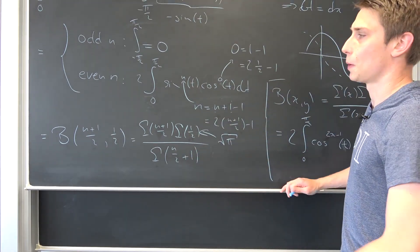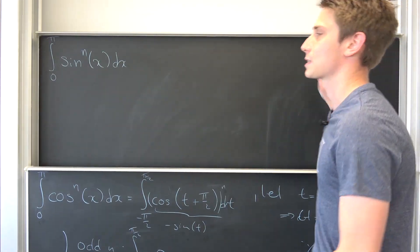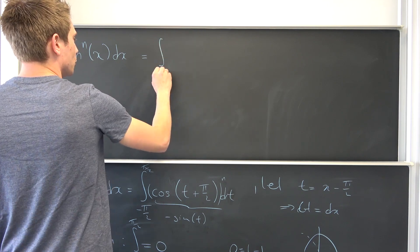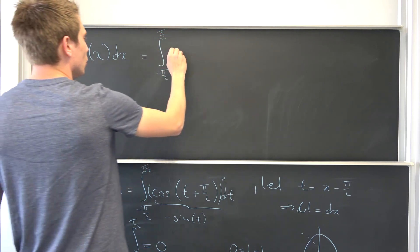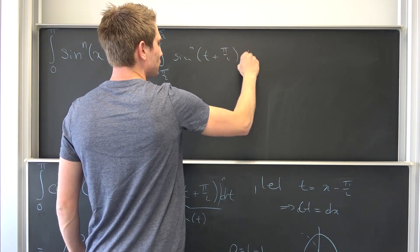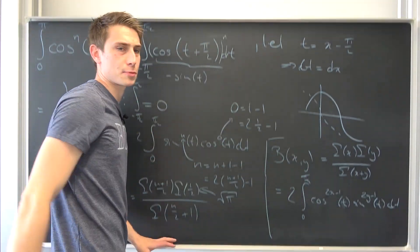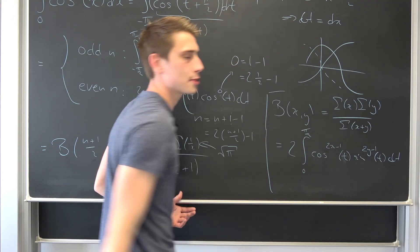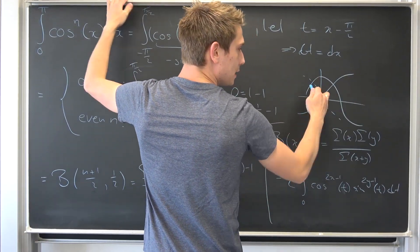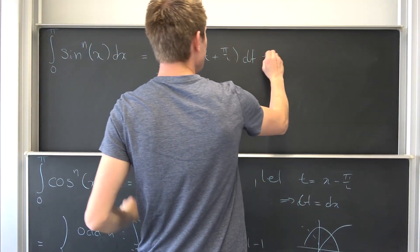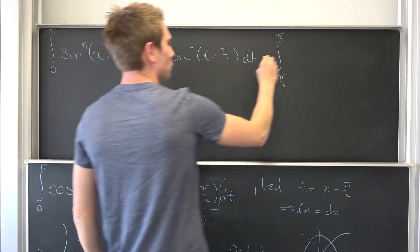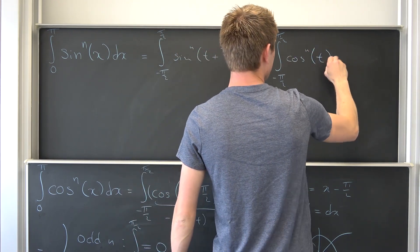So that has been the first part. Now what about the second part — the sine integral? Just like before, we introduce the same substitution to get a symmetric integral. That gives us the integral from negative pi over 2 to pi over 2 of sine to the nth power of t plus pi over 2, dt. The sine of t plus pi over 2 is the cosine wave, giving us the integral from negative pi over 2 to pi over 2 of cosine to the nth power of t, dt.